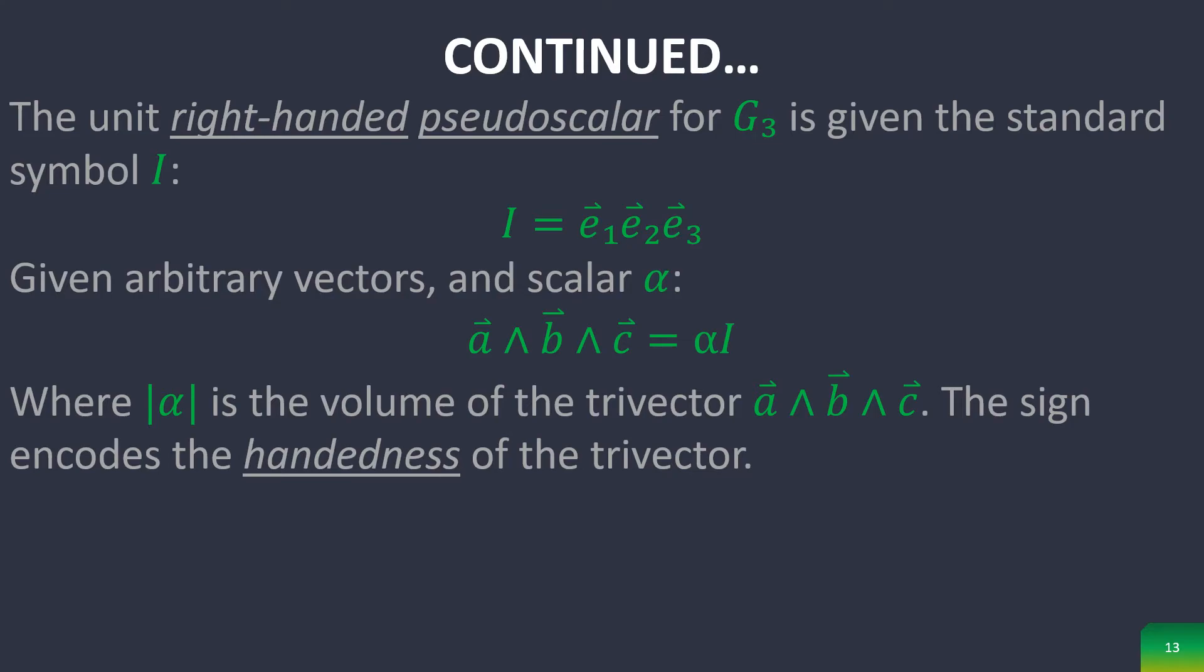Considering the right-handed pseudoscalar for g sub 3, give it the standard symbol i, and then you can prove easily that a wedge b wedge c is equal to some scalar alpha times i, where the magnitude of alpha is the volume of the trivector a wedge b wedge c. The sign encodes the handedness of the trivector.